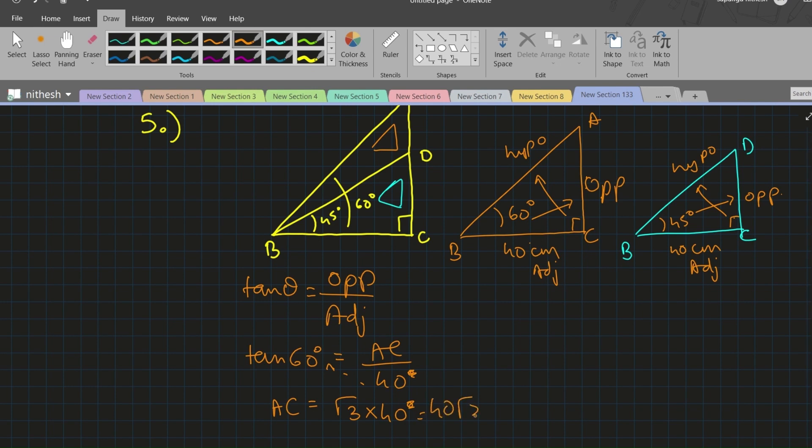This also will be opposite upon adjacent, and this will be tan θ. Over here the θ value is 45 degrees. The value of tan 45° is 1, and DC upon 40 centimeters. So we get the value of DC as 40 centimeters, 40 × 1.